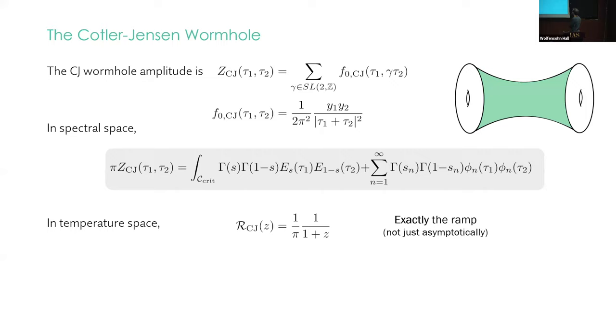Okay, so let's process this in the language that we've presented. In spectral space, here's the amplitude. It has this diagonal form, as promised, with very simple spectral overlaps. And if we ask, what is this R of Z, this thing controlling the scalar mode of the amplitude, it's just 1 over 1 plus Z. Now, 1 over 1 plus Z, when you go to SFF kinematics, is exactly the behavior that any two-copy partition function must have as it approaches the ramp regime.